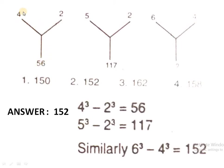This is Type 2: doing some operation between two numbers gives 56. The operation is cubic difference: 4³ − 2³ = 64 − 8 = 56. Similarly, 5³ − 2³ = 125 − 8 = 117. And 6³ − 4³ = 216 − 64 = 152. So 152 is the correct answer, which is the second option.